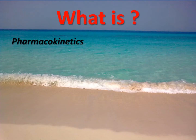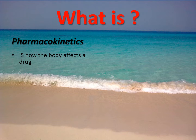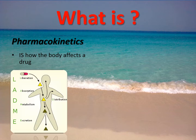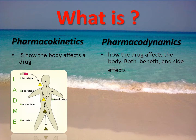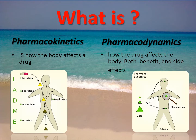Pharmacokinetics is how the body affects a drug from the route of administration: absorption, distribution, metabolism, and excretion. While pharmacodynamics is how the drug affects the body, both benefit and the side effects.